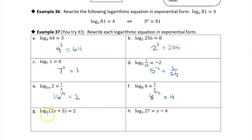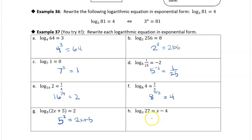Log base 5 of 2x + 5 equals 2: the base is 5, 2 is the exponent, so 5 to the 2nd power equals 2x + 5. You can start to see how we can use logs to solve equations now — this is an equation we could solve for x, but we're just rewriting these logarithmic equations in exponential form. Log base 3 of 27 equals 4x minus 1: the base is 3, the log is the exponent so 4x minus 1 is the exponent, and 27 is the result, so 3 to the power 4x − 1 equals 27.